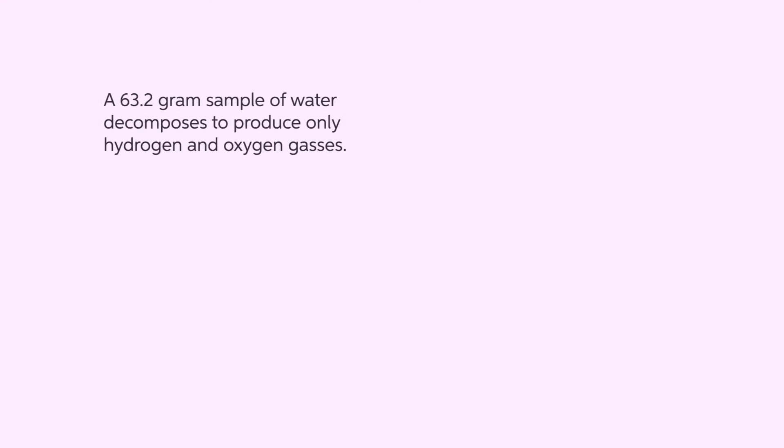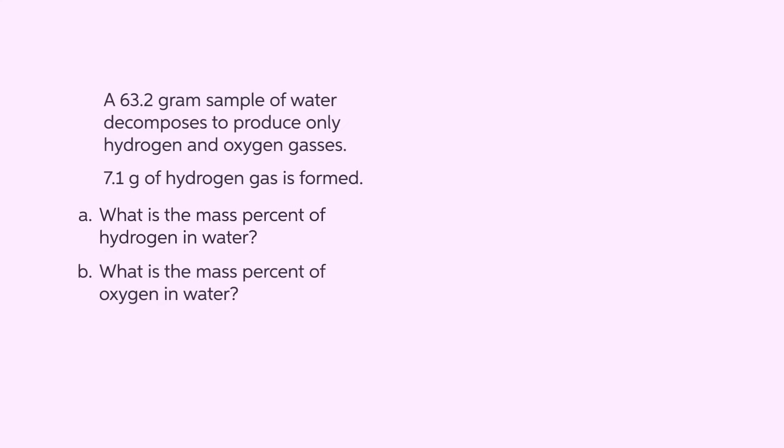Let's do an example to illustrate how to use given information to find mass percent. A 63.2 gram sample of water decomposes to produce only hydrogen and oxygen gases. 7.1 grams of hydrogen gas is formed. What is the mass percent of hydrogen in water? What is the mass percent of oxygen in water? And what mass of oxygen was produced?